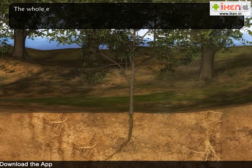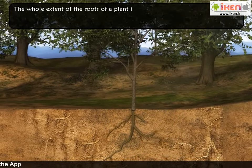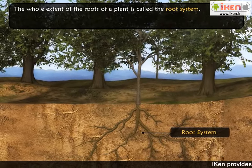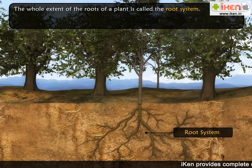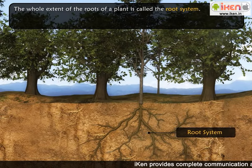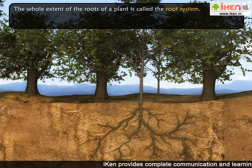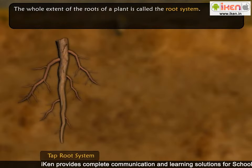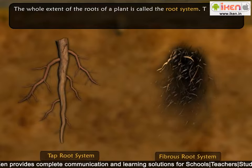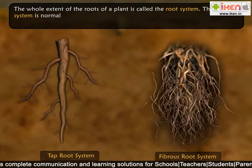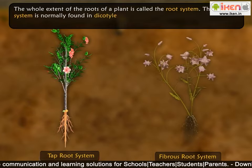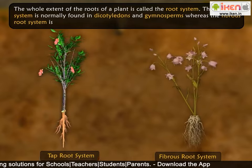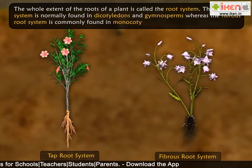The whole extent of the roots of a plant is called the root system. The development of the root system differs fundamentally in vascular plants and may be classified into two categories: one, the tap root system, and two, the fibrous root system. The tap root system is normally found in dicotyledons and gymnosperms, whereas the fibrous root system is commonly found in monocotyledons.